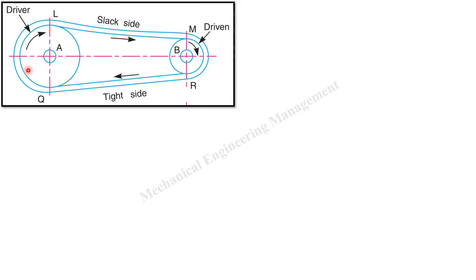Here you can see this is the driver which is rotating in the clockwise direction, so it will pull from this direction and thus this will be the tight side, and this one is the slack side.